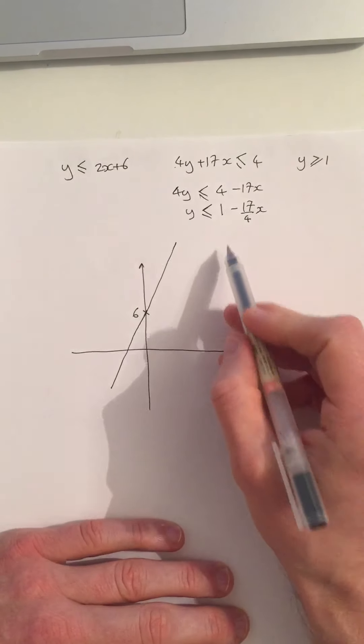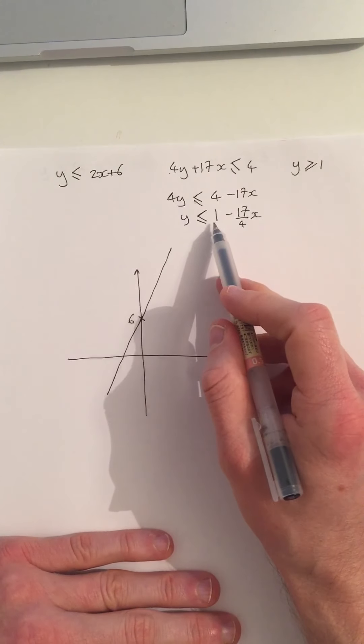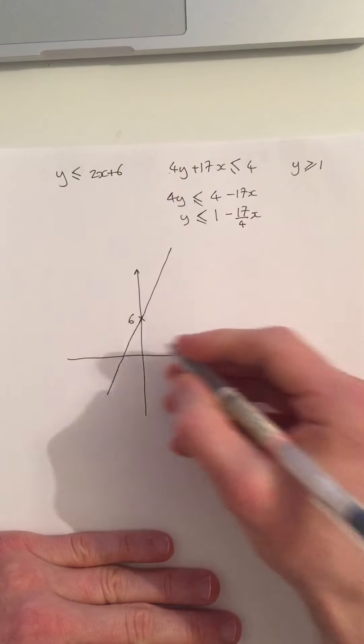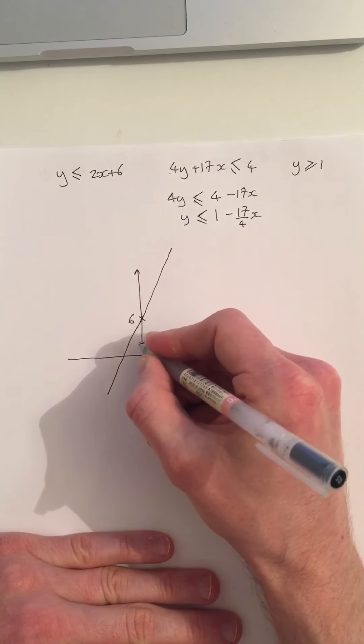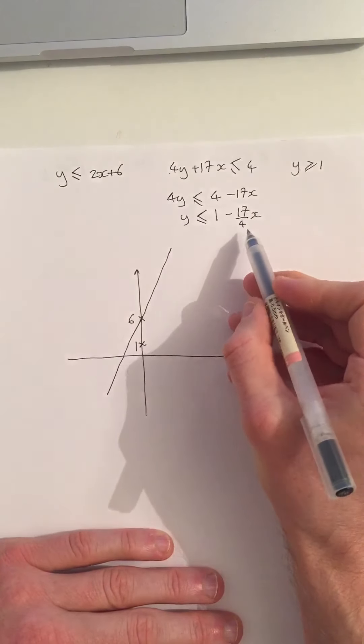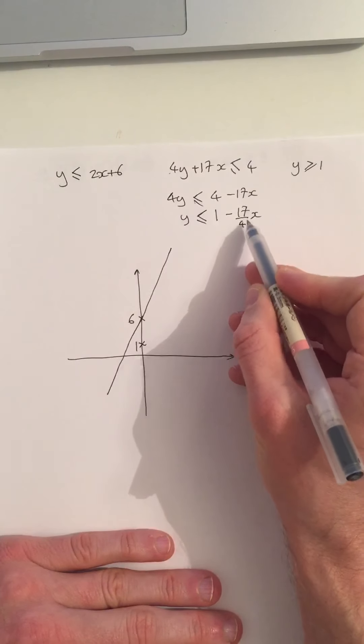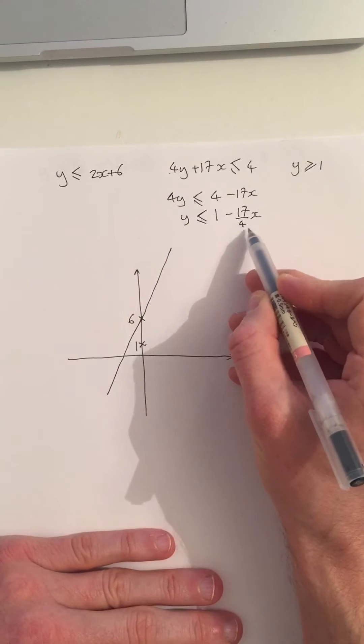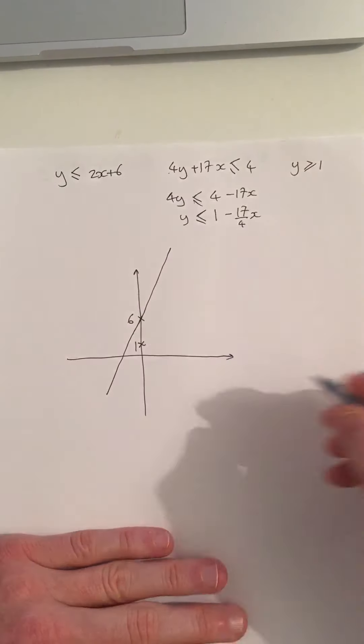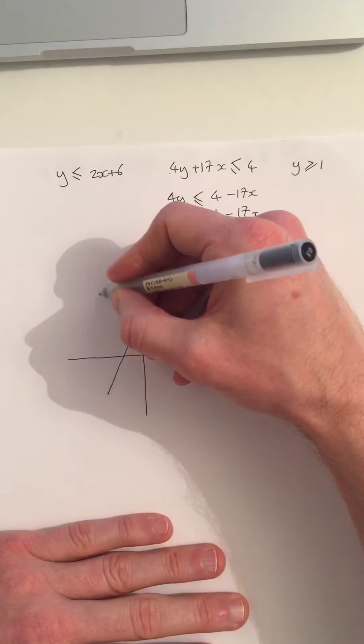Now this is the form y equals mx plus c. The y-intercept is 1, so it's going to cut through here at 1. And I can see that the gradient is minus 17 over 4. Basically minus 4 and a bit. So it's basically going to be going down. So I'll draw that like this.